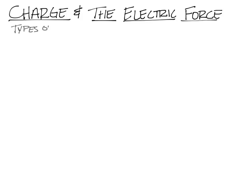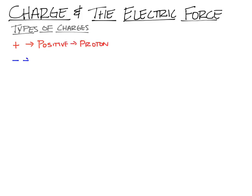We're going to talk about different types of charges. We only have two types of charges: positive and negative. And you guys are already familiar with this from chemistry. Positive charge comes from protons, negative charge comes from electrons.